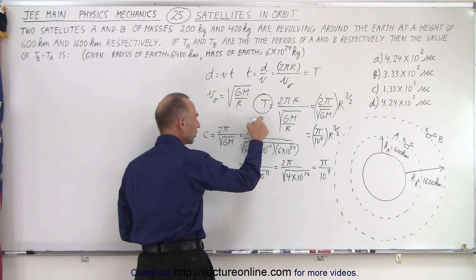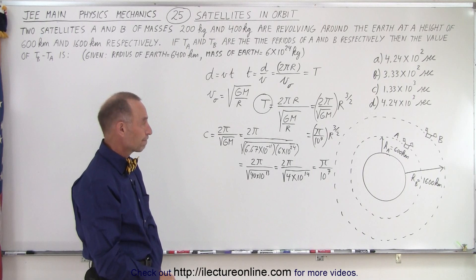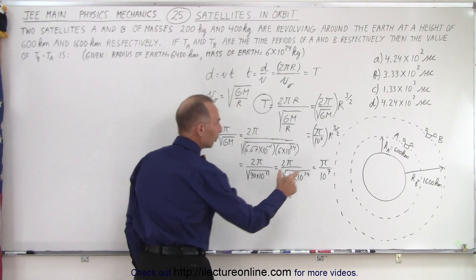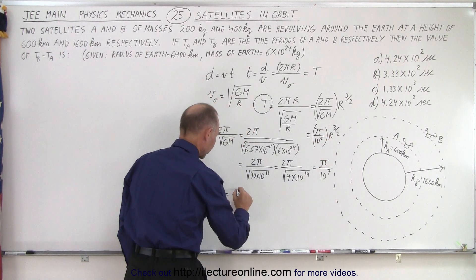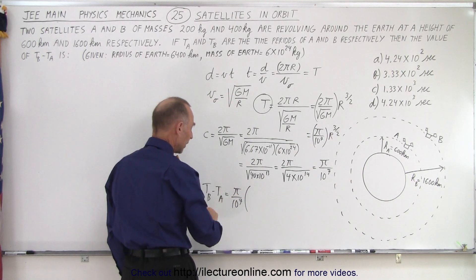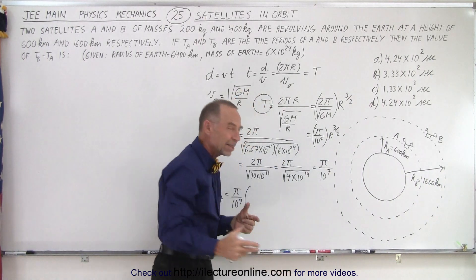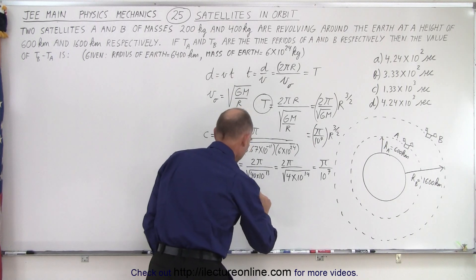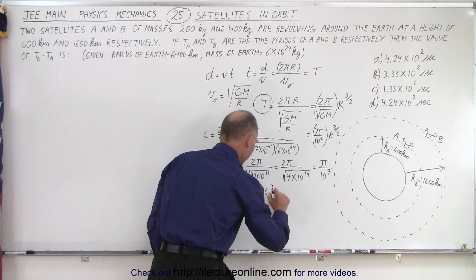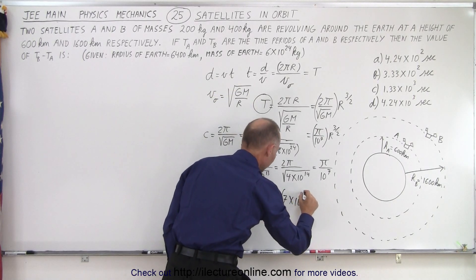Now we have an expression for the period of a satellite, which makes things easier without a calculator. We need the difference T_B minus T_A. We can factor out π over 10 to the 7th: T_B minus T_A = (π / 10^7) times (r_B to the 3/2 power minus r_A to the 3/2 power). The radius of orbit B is 1600 + 6400 = 8000 km, or 8 times 10 to the 6th meters, raised to the 3/2 power. Minus the radius of orbit A, which is 600 + 6400 = 7000 km, or 7 times 10 to the 6th meters, raised to the 3/2 power.